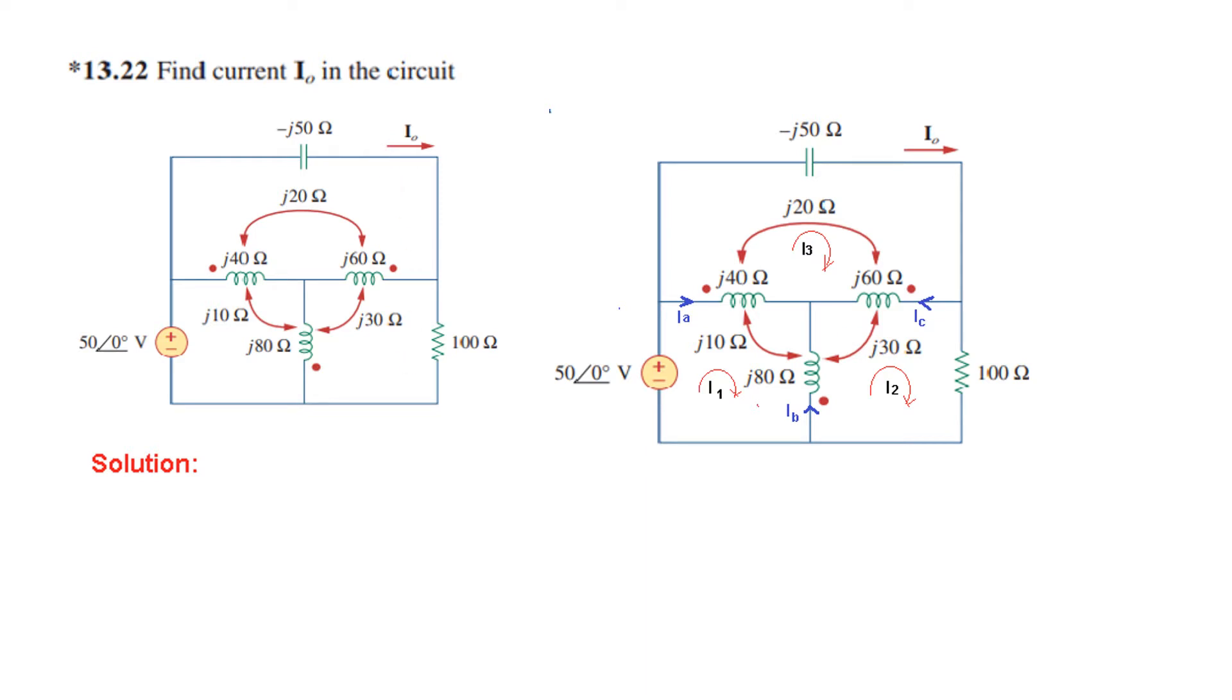So the first thing we will do is write the branch currents, just for our ease: Ia, Ib, and Ic. Even if you don't write, no problem, you can write in terms of the loop currents. And the loop currents, this one we have named I1, this I have named I2, and this is I3. Now one interesting point to note is these arrows, they show the mutual linking between the coils. So this coil is mutually linked with this one, and the value of M is J10, mutual inductance is J10 in this case. Between these two it is J30, and between these two it is J20. So we have to keep this in mind.